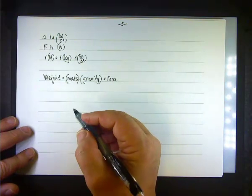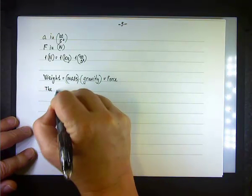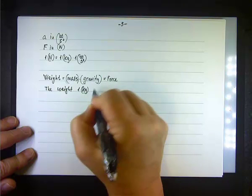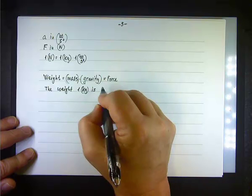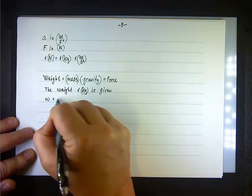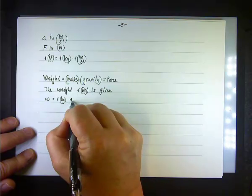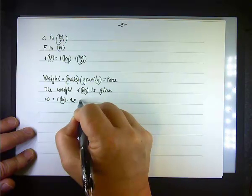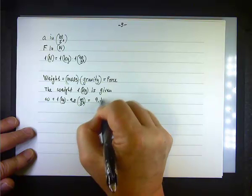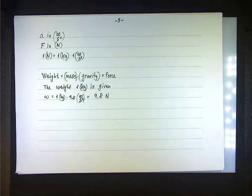In metric units, the weight of one kilogram mass — W equals one kilogram times G, where gravity G is 9.8 meters per second squared — gives us 9.8 Newtons. So one kilogram mass is really 9.8 Newtons.